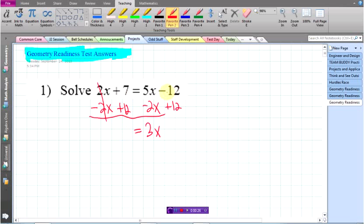So when I do that, I have 19 equals 3x. So I have one more step in here. I'm going to divide both sides by 3, and my final answer is 19 thirds.